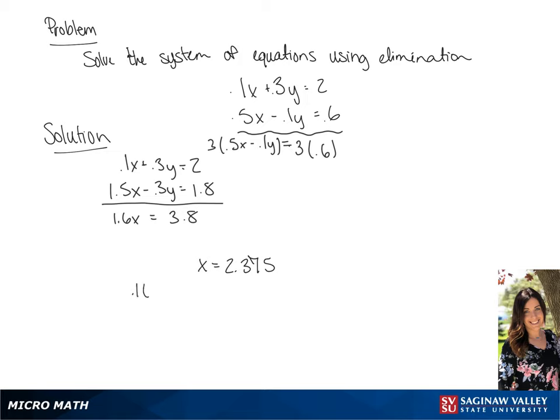Now we're going to plug in 2.375 for x in the first equation. This gives us 0.1 times 2.375 plus 0.3y equals 2. We get 0.2375 plus 0.3y equals 2. We subtract 0.2375 from both sides, and we get 0.3y equals 1.7625.